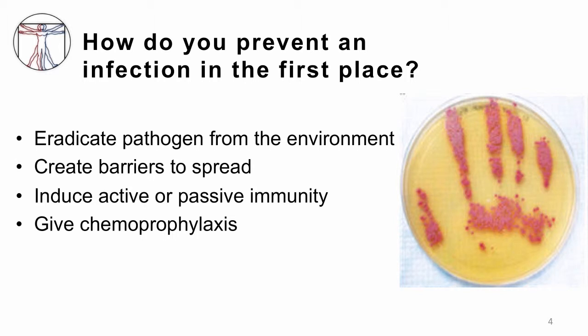How do you prevent an infection in the first place? There are four ways to think about preventing infections. One, you could eradicate any potential pathogens from the environment, because if they're not there, they're not going to be able to get into your patient. Two, you can create barriers to spread if there are pathogens around. Three, you could induce active or passive immunity in your patient to prevent potential infection from causing disease. And four, you could give chemoprophylaxis or antimicrobial agents to inhibit the growth of organisms if they were to infect your patient.